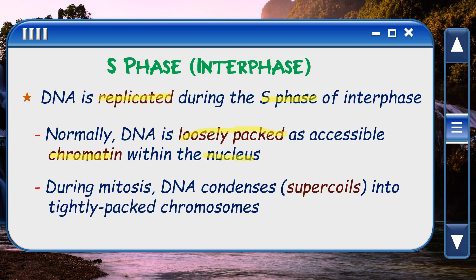During mitosis, the chromatin DNA condenses — that is, it supercoils into tightly packaged chromosomes. The DNA becomes shorter and thicker, meaning it is tightly packed and supercoiled, and that occurs during mitosis.